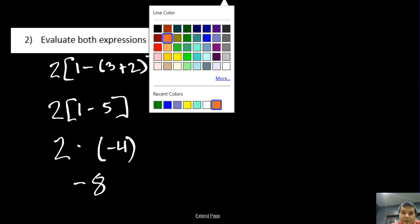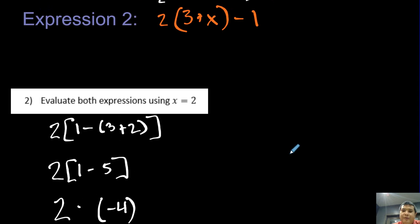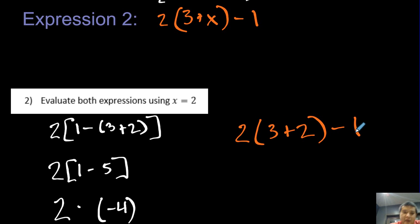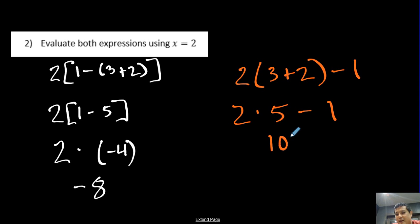For expression 2, substituting x equals 2 gives us 2 times (3 plus 2) minus 1. We do what's in parentheses first: 3 plus 2 is 5, so we have 2 times 5 minus 1. Using order of operations, 2 times 5 is 10, then 10 minus 1 gives us 9.